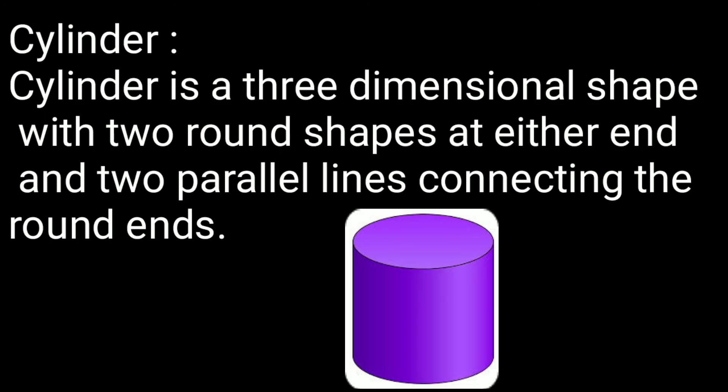Cylinder: A cylinder is a three-dimensional shape with two round shapes at either end and two parallel lines connecting the round ends.